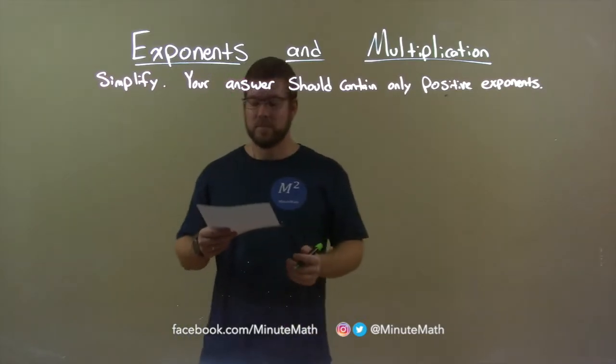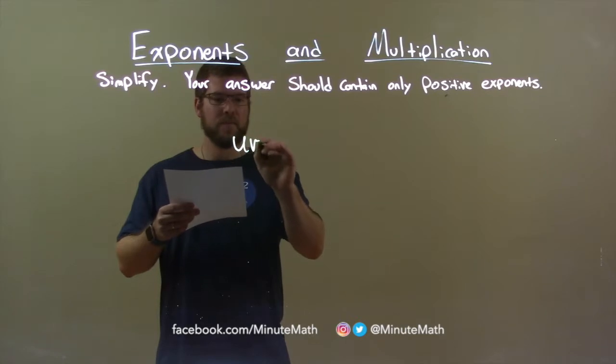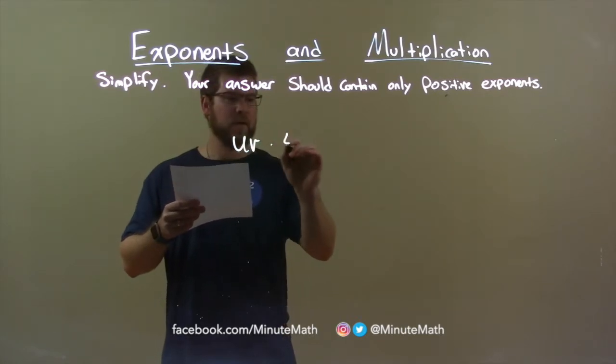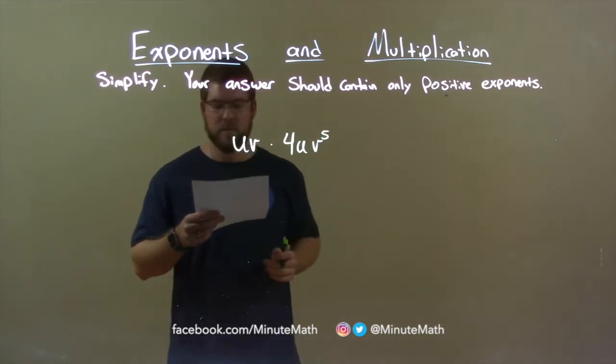We're going to simplify, and your answer should contain only positive exponents. So if I was given this problem: uv multiplied by 4uv to the fifth power.